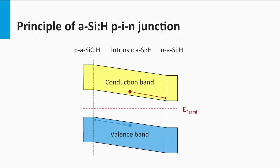Note that as the absorber layer is intrinsic, the charge carriers neither belong to the minority nor majority charge carriers — the hole and electron density are in the same order of magnitude. In the p-layer, holes are the majority charge carriers and diffusion is the dominant transport mechanism. In the n-layer, electrons are the majority charge carriers and diffusion is the dominant transport mechanism.